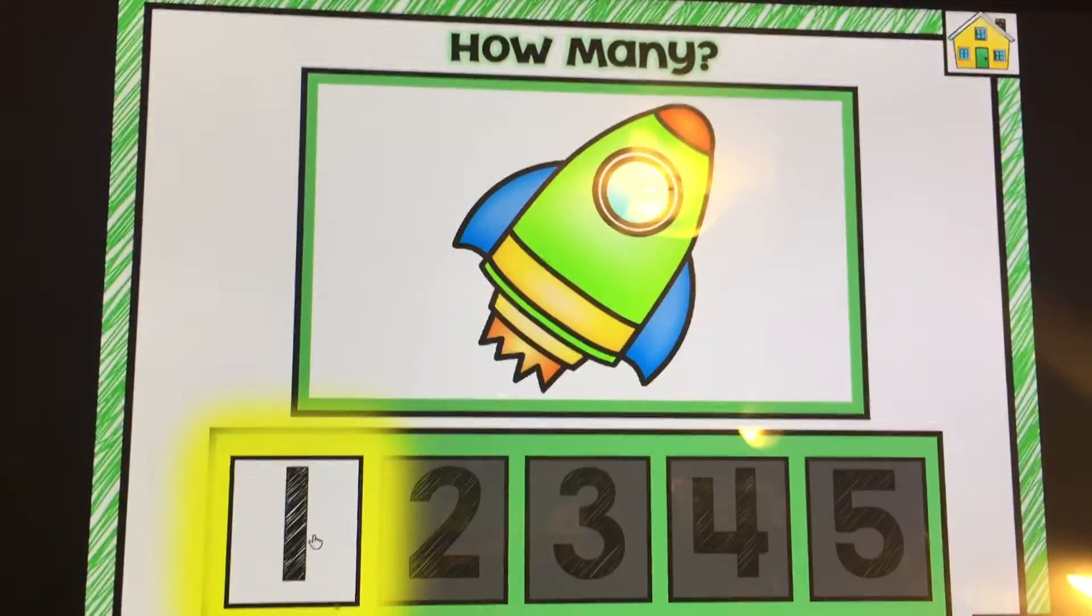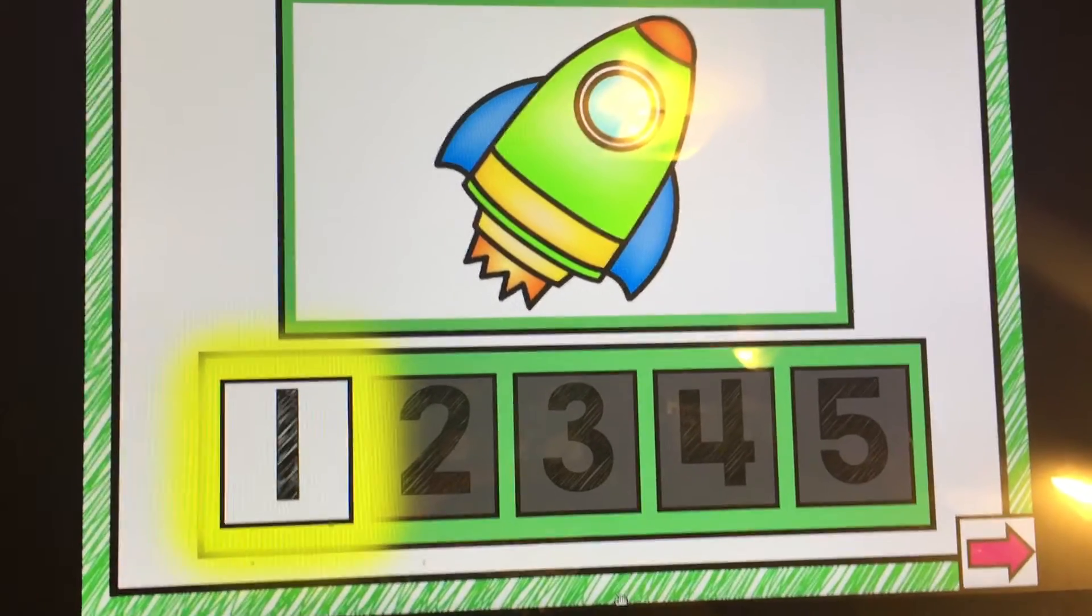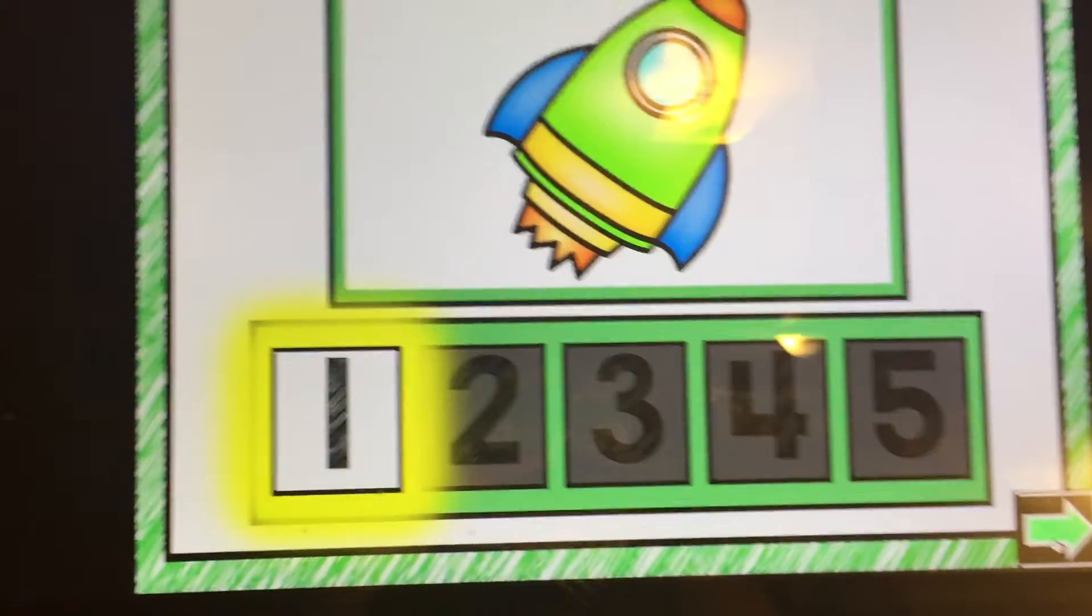So there's one rocket ship. Okay, you'll see an arrow come up the bottom. That means go to the next page.